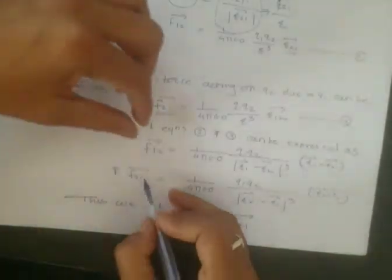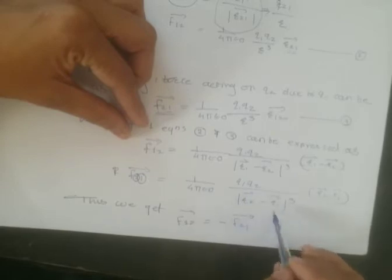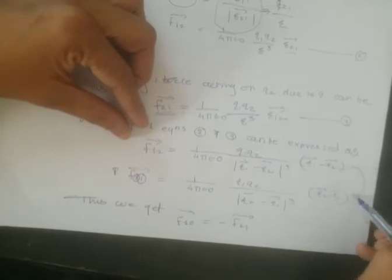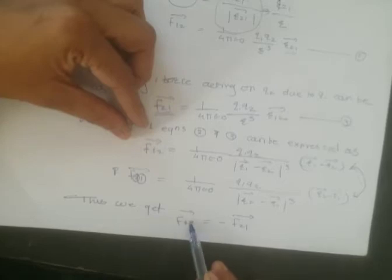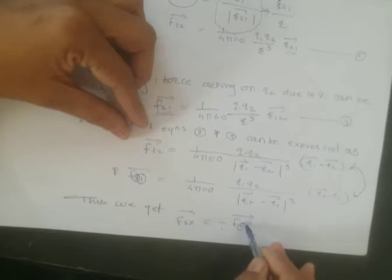Similarly, the force acting on q2 due to q1 can be expressed as (1/4πε₀) · q1·q2 / |r₂ − r₁|³ · (r₂ − r₁). From these two equations we get that F₂₁, the force on q1 due to q2, is equal to minus the force on q2 due to q1.